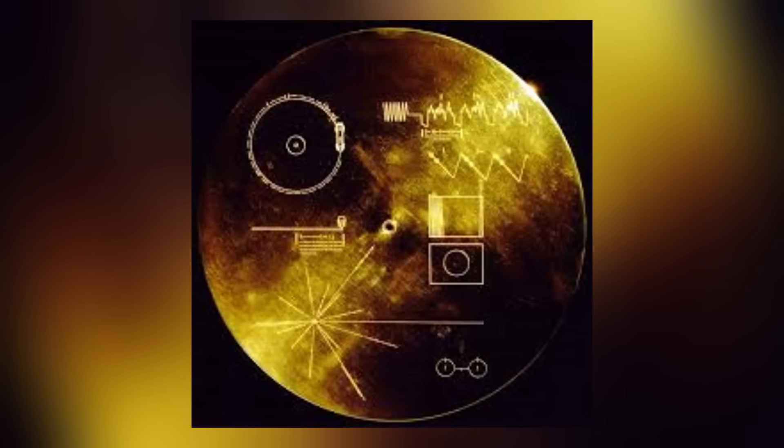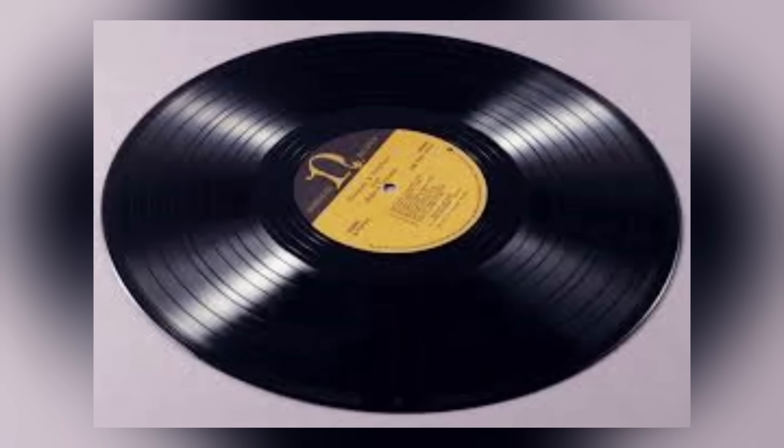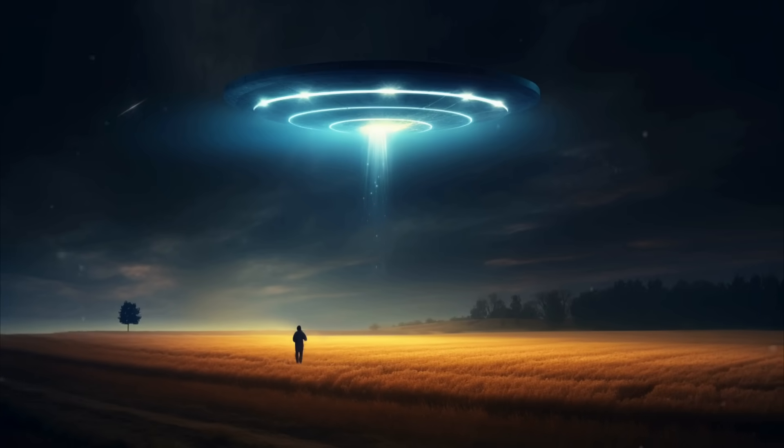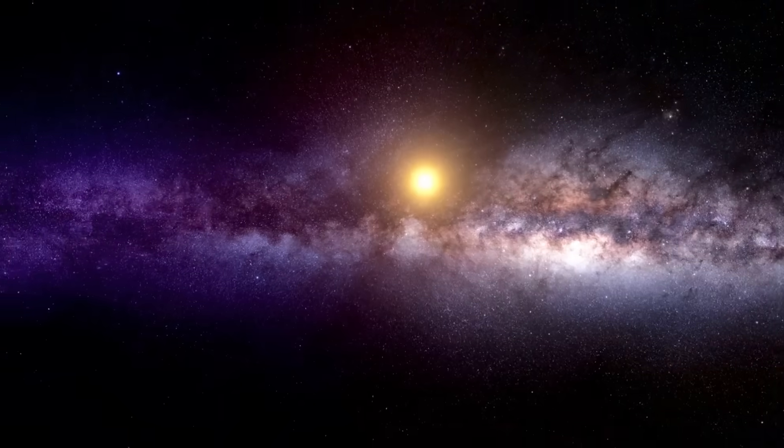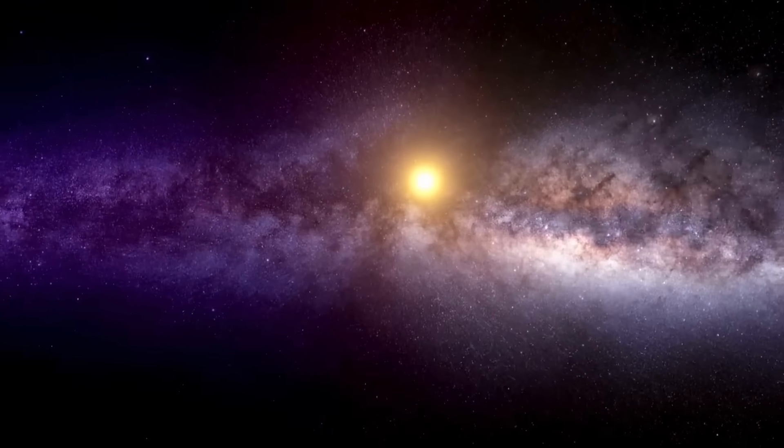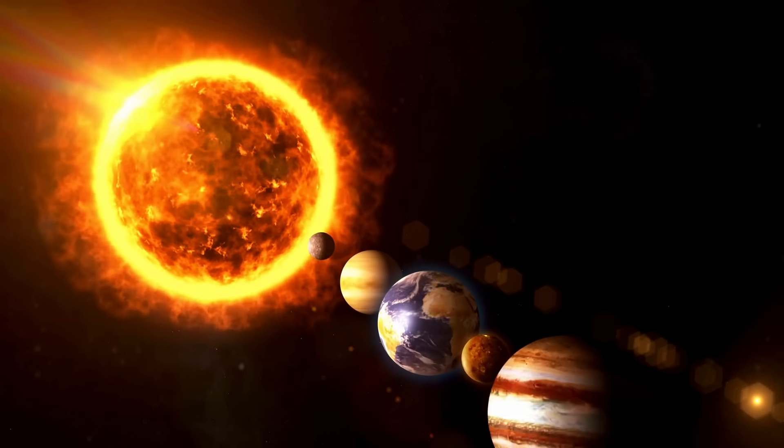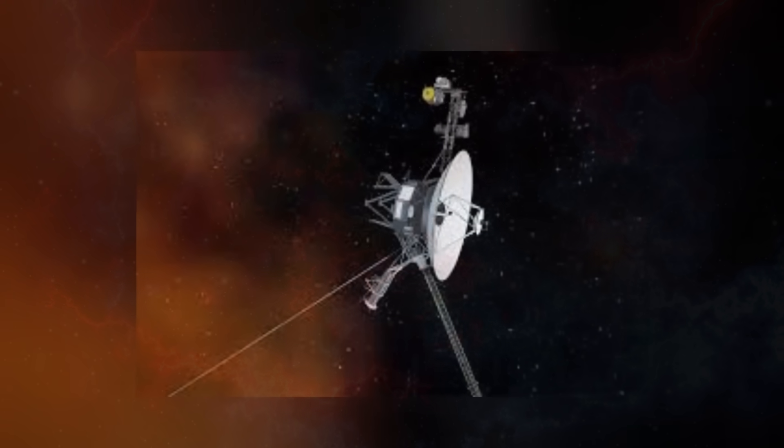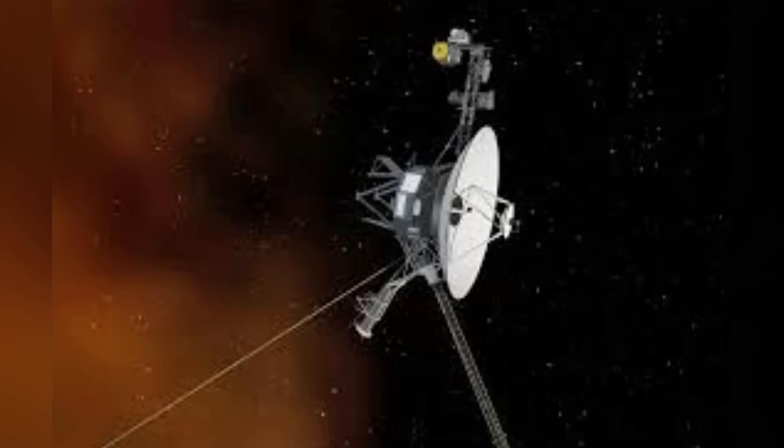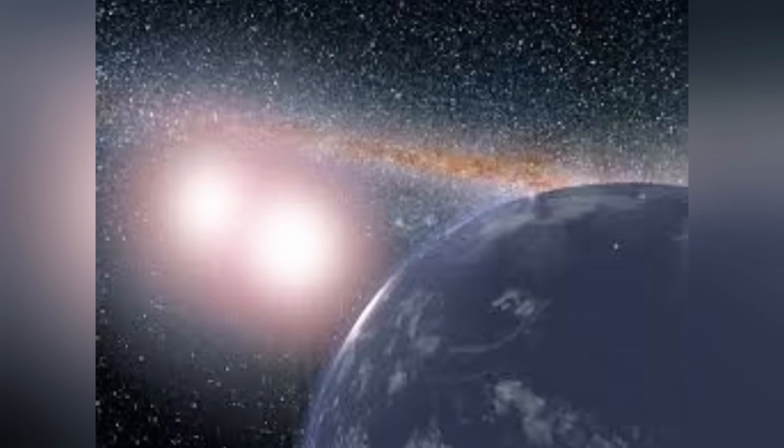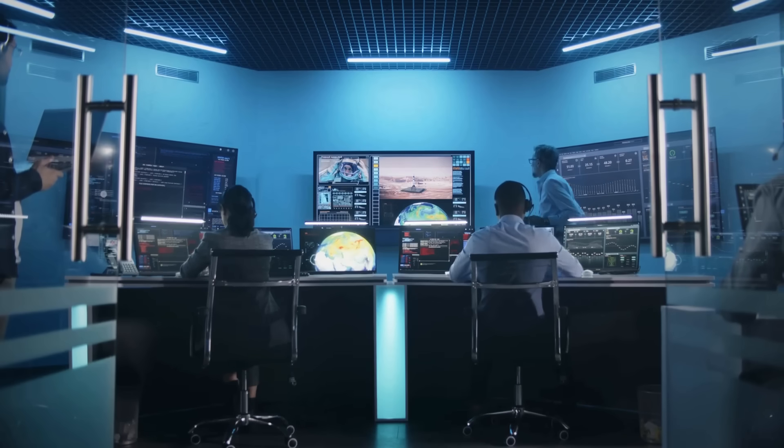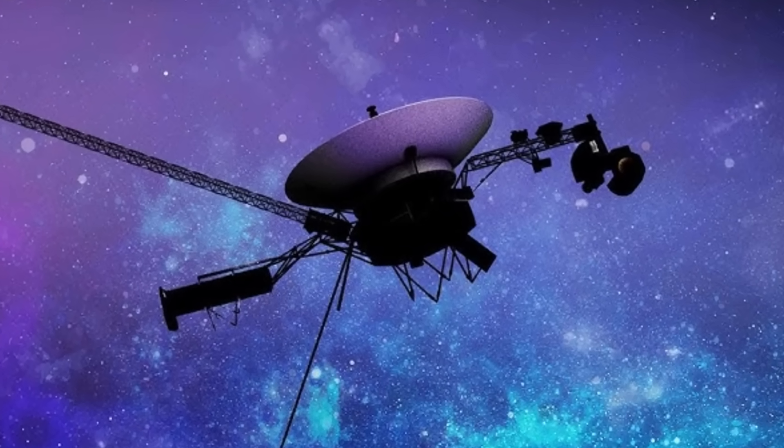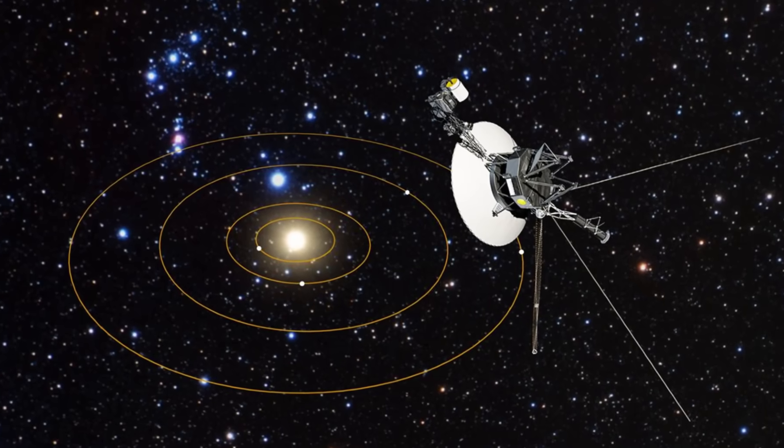Both spacecraft also carry golden records, phonograph records containing sounds and images that represent the diversity of life and culture on Earth, intended as a message for any extraterrestrial beings they may encounter. These records serve as a time capsule, embodying humanity's curiosity and aspiration to connect beyond our solar system. Our knowledge of the solar system and interstellar space has been revolutionized by Voyager 1 and Voyager 2. Taken together, from the structure of the heliosphere to the dynamics of planetary atmospheres, their data has helped scientists make many discoveries.